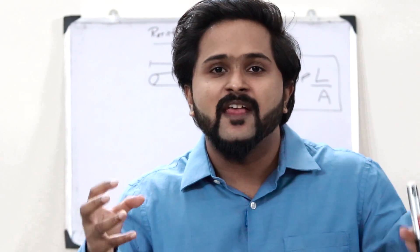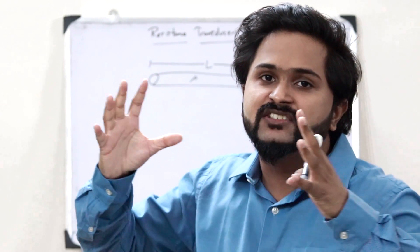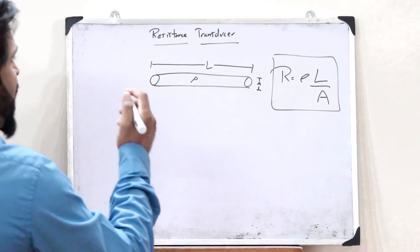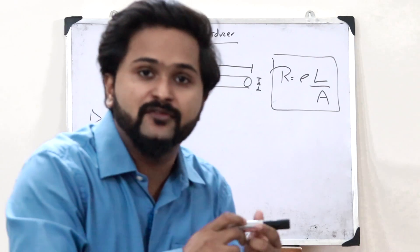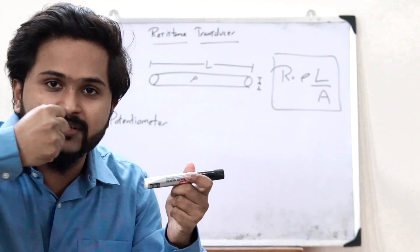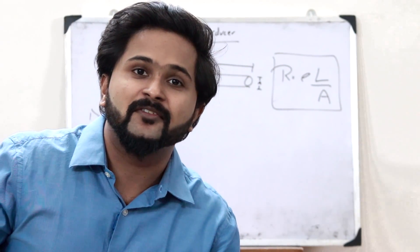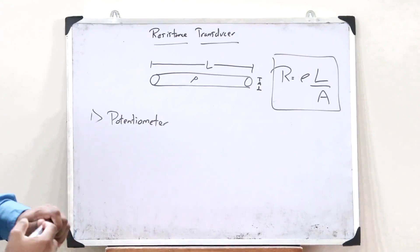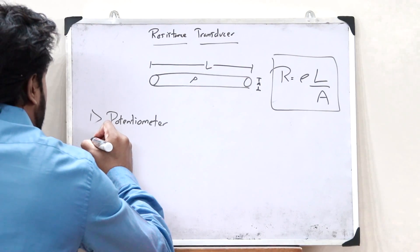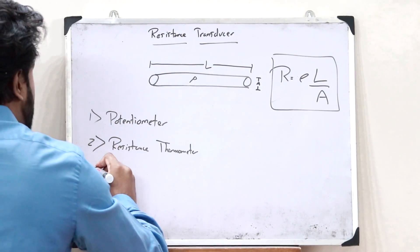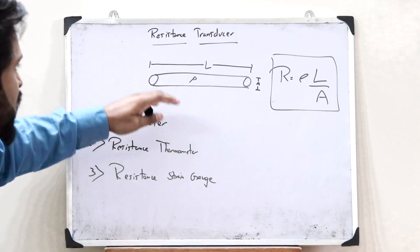A resistance transducer is simply a transducer that measures a physical quantity and gives the output as a change in resistance. Certain examples of resistance transducers are: one, a potentiometer — as we move the brush along the potentiometer and change its effective length, we see a variation in resistance. The second one is a resistance thermometer, and the third one is a resistance strain gauge. So these are the three types of resistance transducer.